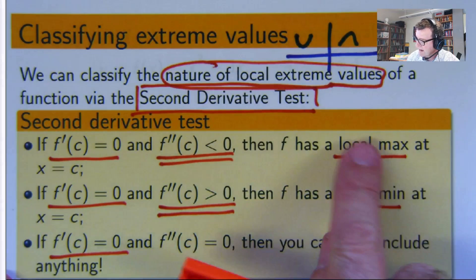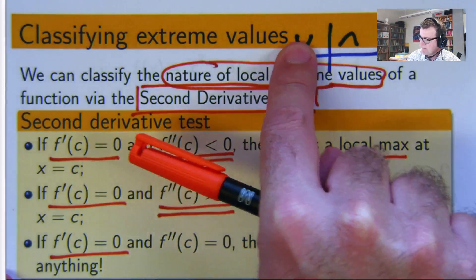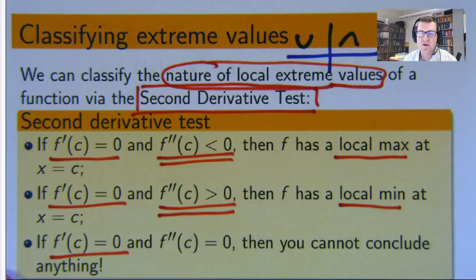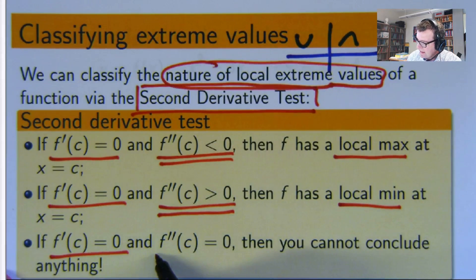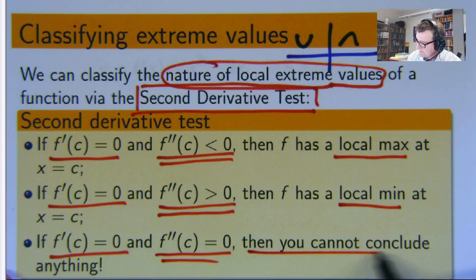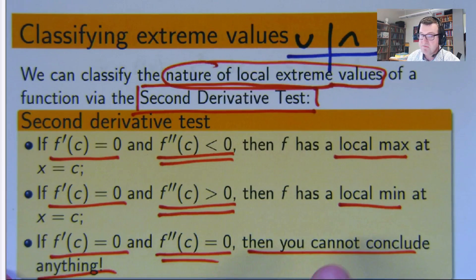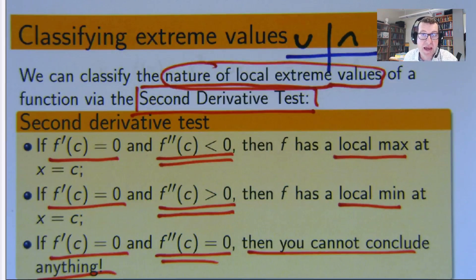The second part says if the second derivative is positive, then we have a local min. So a local max looks like that. A local min looks like that. And the third part, and this is where a lot of students get confused, is if the second derivative is zero, then the test fails. You cannot say anything.